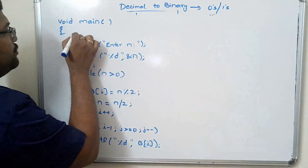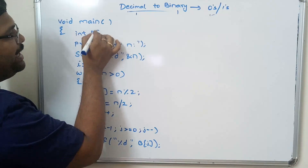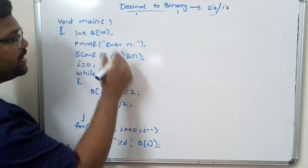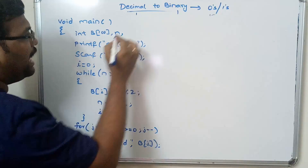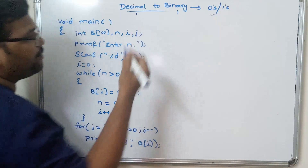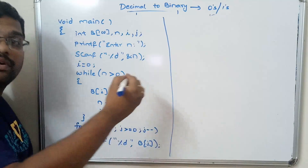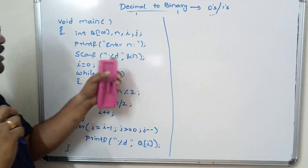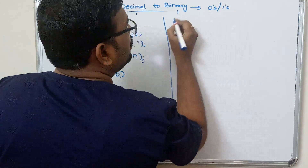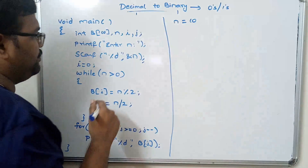Now let us write the declarations. We need an int array b[100], and int variables n, i, and j. Now let us trace the program. From scanf, if n = 10 — n is equal to 10.